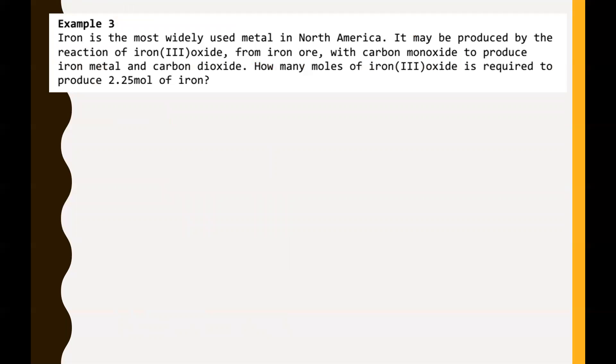We're going to try another example here. Iron is the most widely used metal in North America. It may be produced by the reaction of iron three oxide from iron ore with carbon monoxide to produce iron metal and carbon dioxide. How many moles of iron three oxide is required to produce 2.25 moles of iron? First things first, get a balanced chemical equation. Iron three oxide, that's a three positive charge. Oxygen has a two negative charge, swap and drop. This is going to be Fe2O3. It's reacting with carbon monoxide, that's CO, and that's going to be producing iron metal, which is just Fe, and carbon dioxide, CO2.